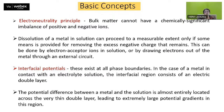A few basic concepts. One is the electroneutrality principle: bulk matter cannot have a chemically significant imbalance of positive and negative ions. If you continue to dissolve a particular metal into solution, it will only proceed to a measurable extent if there is some means to remove the excess negative charge being developed — either by adding electron acceptor ions to the solution or by drawing the electrons out of the metal through an external circuit. That is because of the electroneutrality principle.